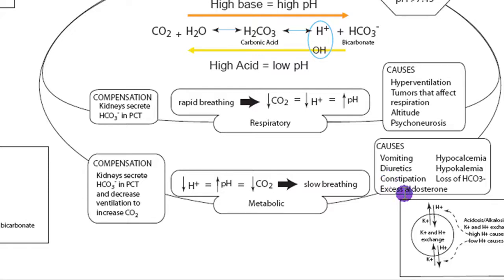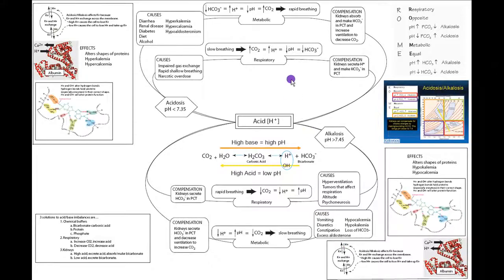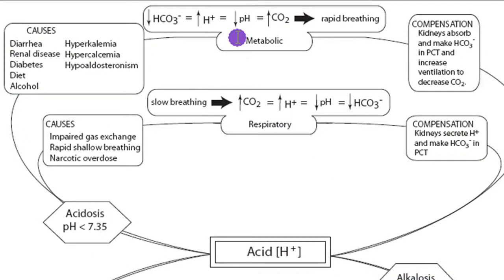Excess aldosterone can cause a loss of potassium. If potassium is lost, it leaves the cell, and hydrogen must go into the cell in exchange, causing alkalosis.